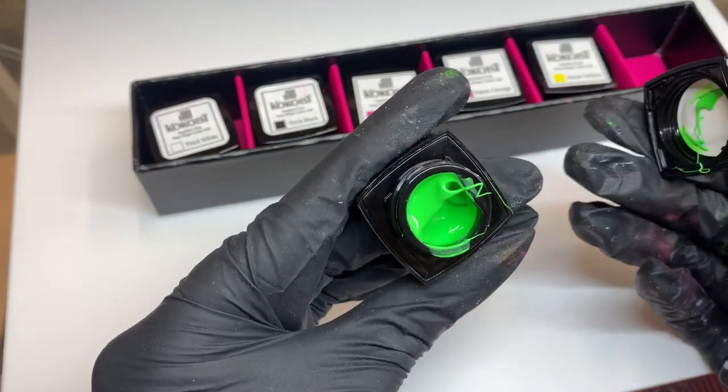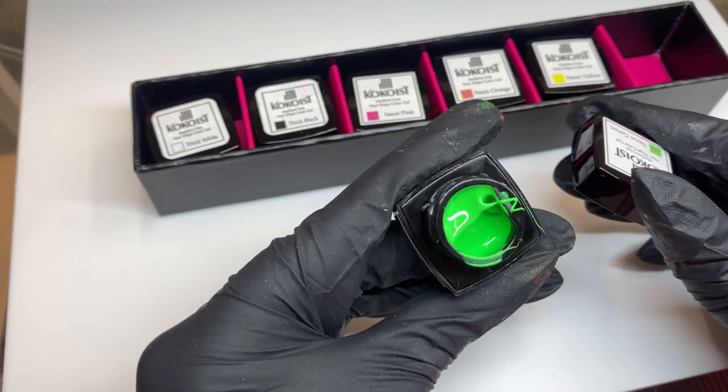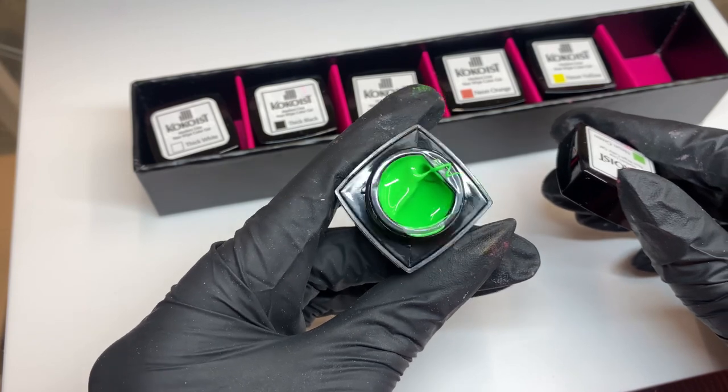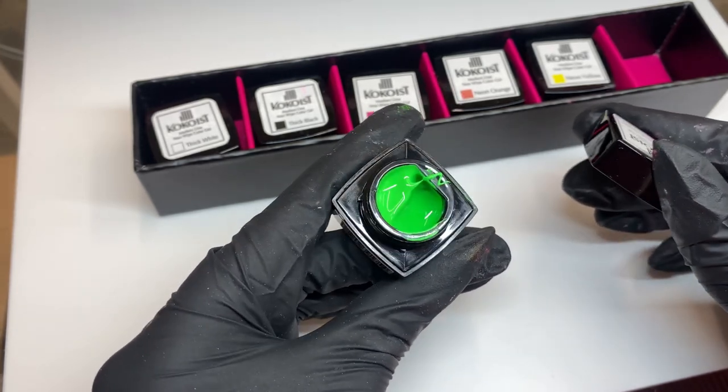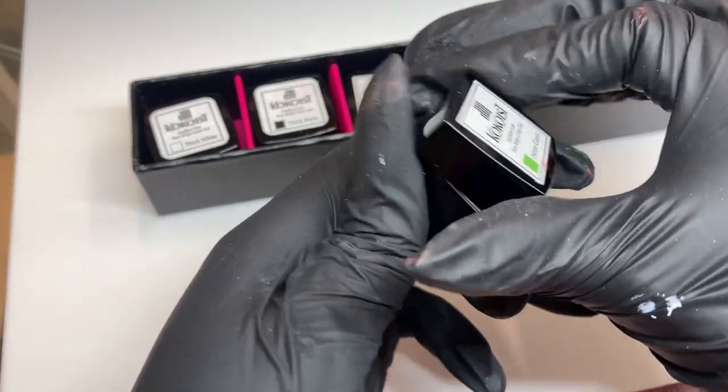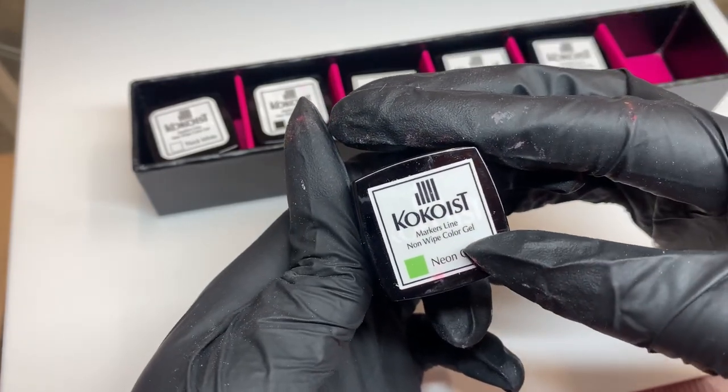And then we have a neon green. This is really nice. It reminds me of Cocoa's neon Toy Green as well, but obviously this one would be a thicker consistency and again it's non-wipe, so you don't have to put top coat over this. So yeah, I'm going to show you some cool designs that we can do with the markers line and specifically non-wipe color gel.